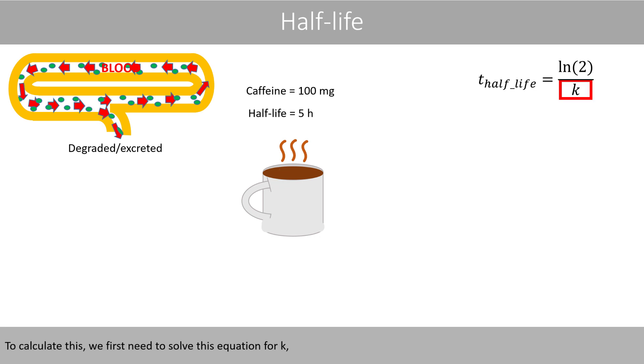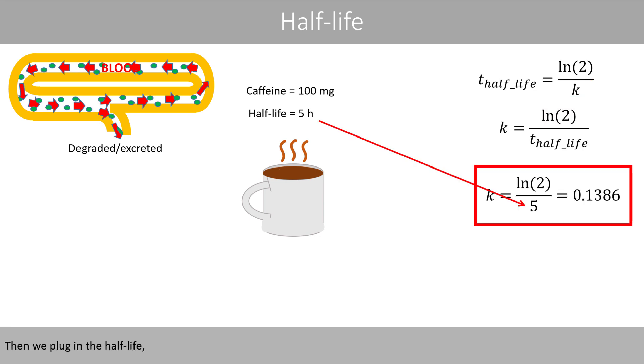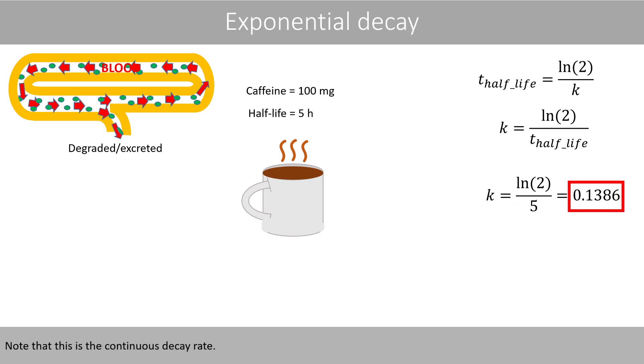To calculate this, we first need to solve this equation for k. Like this. Then we plug in the half-life and do the math. Note that this is the continuous decay rate.